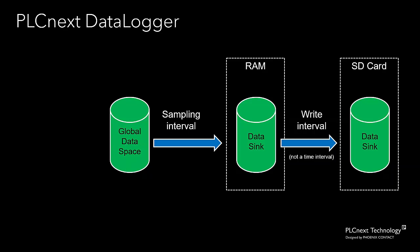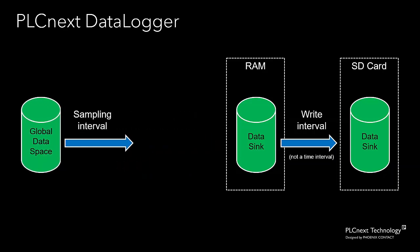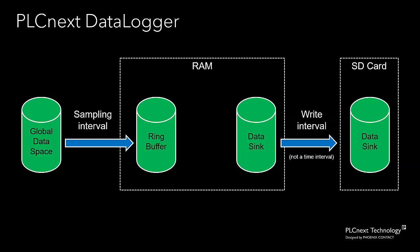There's an additional problem with this arrangement. The samples that are taken from the global data space must be taken in a real-time deterministic manner and synchronized with the other tasks that are running on the execution and synchronization manager. It turns out that the data sync we're using is not designed to receive data in a real-time way. So to avoid the problems that this would cause, we put another buffer in between the global data space and the in-memory data sync.